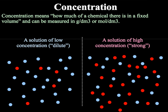Concentration is how much of a chemical there is in a fixed volume, measured in grams per dm cubed or moles per dm cubed. For comparison, a low or dilute concentration has many water molecules and very few solute molecules. A high or concentrated solution has relatively few solvent particles but lots and lots of solute particles — for example, a salt or a sugar.